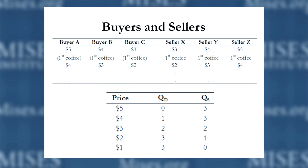Looking at sellers X, Y, and Z, we get the exact opposite relationship. At a price of five dollars, all of them are willing to sell, since all place their coffee above a monetary value of five dollars — even seller Z, who would be willing to sell for four dollars, is in. As the price drops, more and more sellers remove units from supply. At two dollars, only seller X wants to sell, since X is the only one who places that coffee above two dollars on his value scale. If someone offered one dollar, nobody values a coffee below one dollar, so quantity supplied is zero.